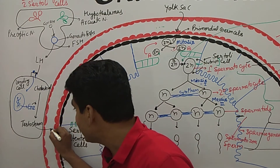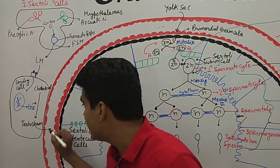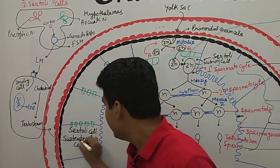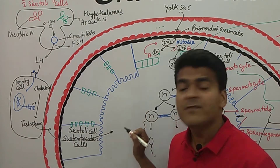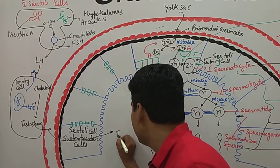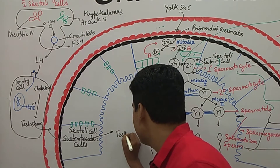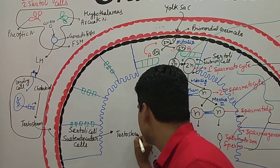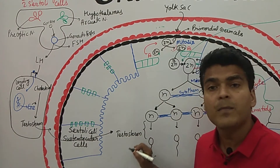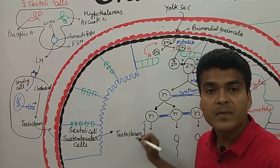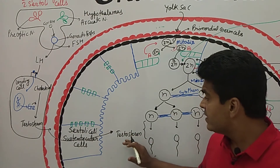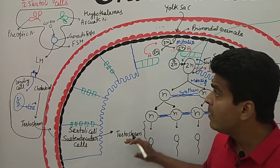The testosterone produced by Leydig cells enters the blood and moves into the seminiferous tubules. Testosterone reaches the lumen of the seminiferous tubules, where it performs its function.